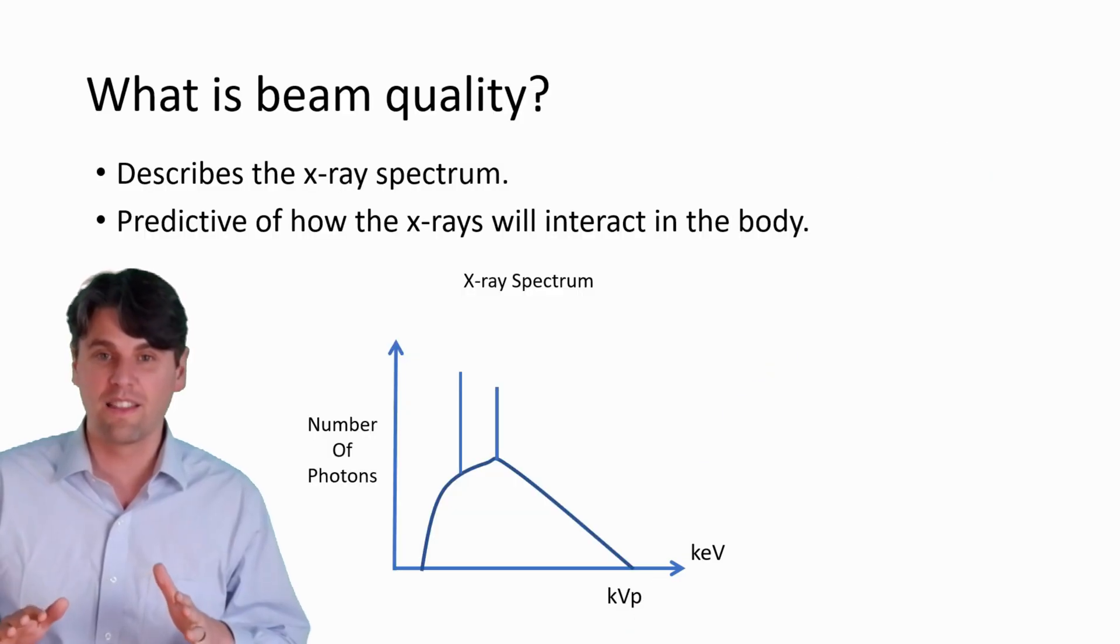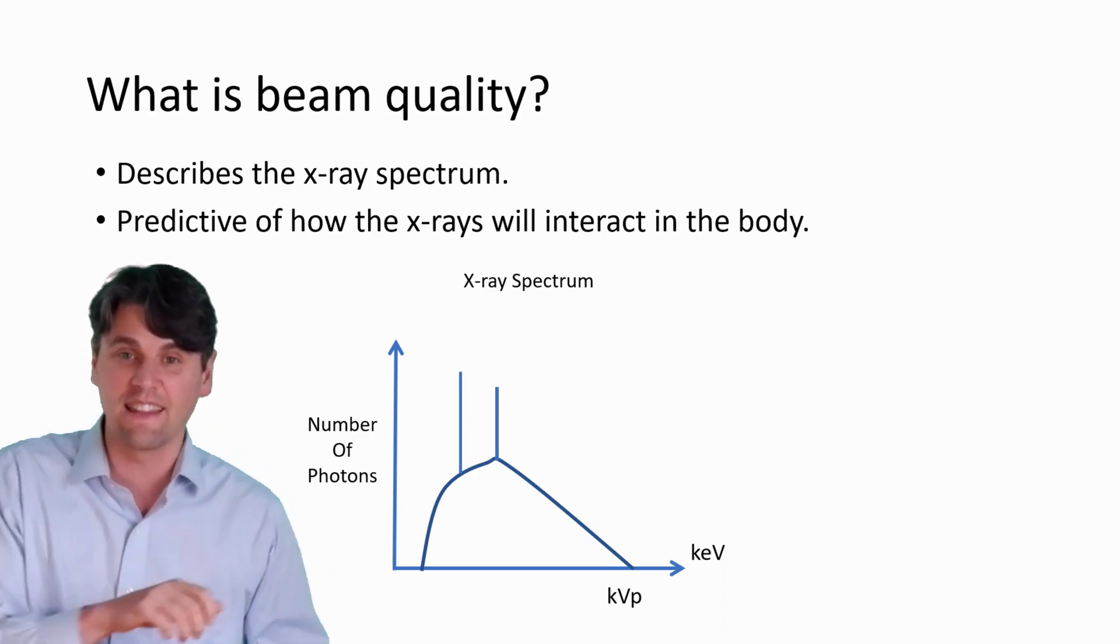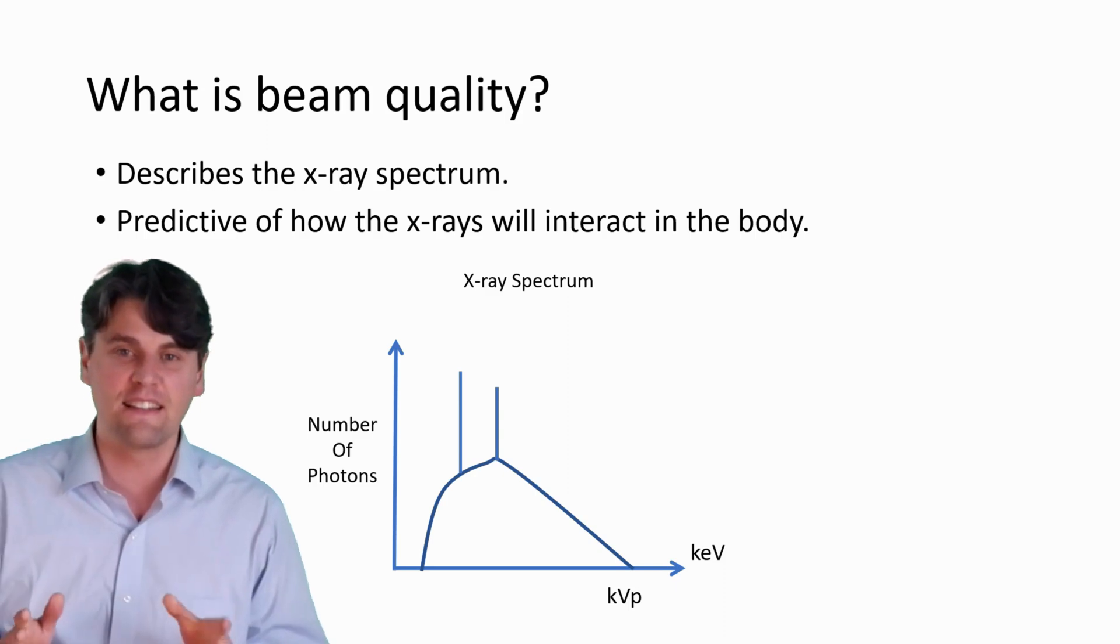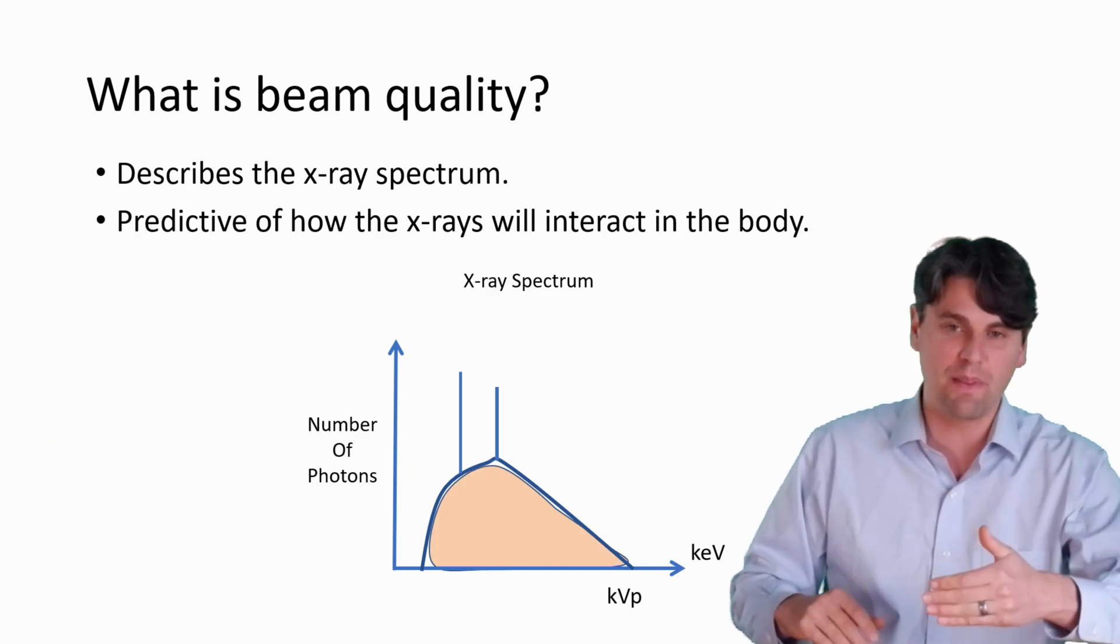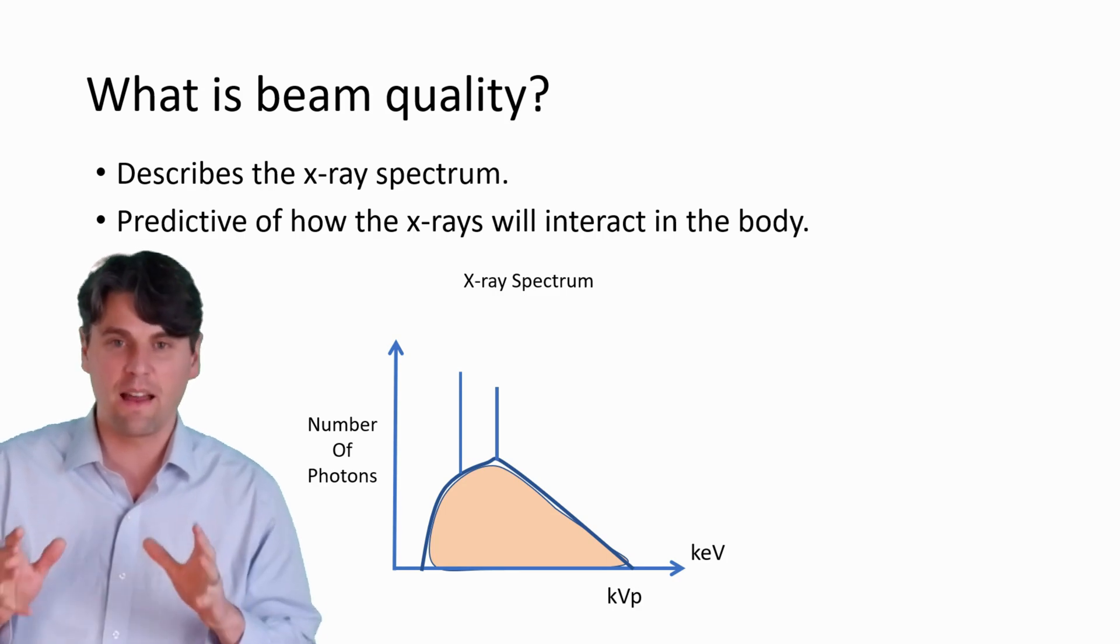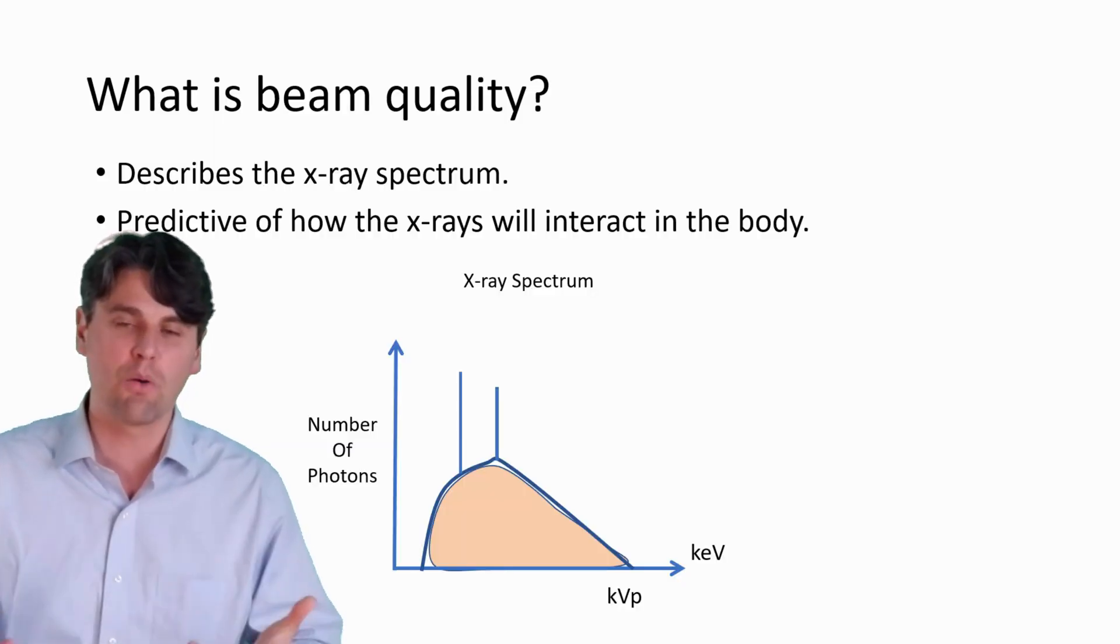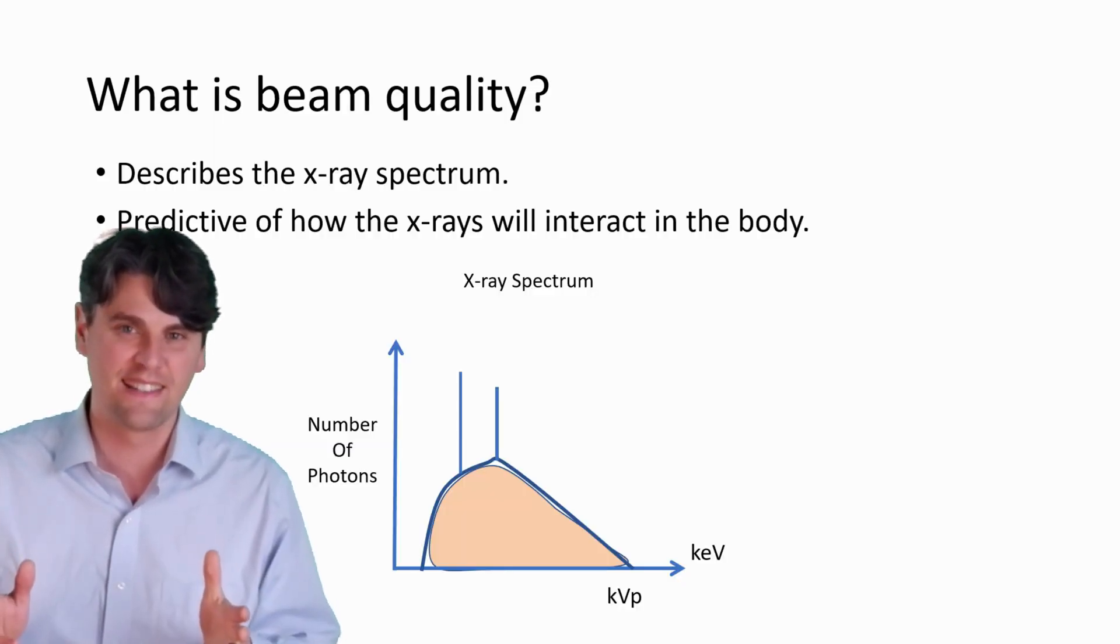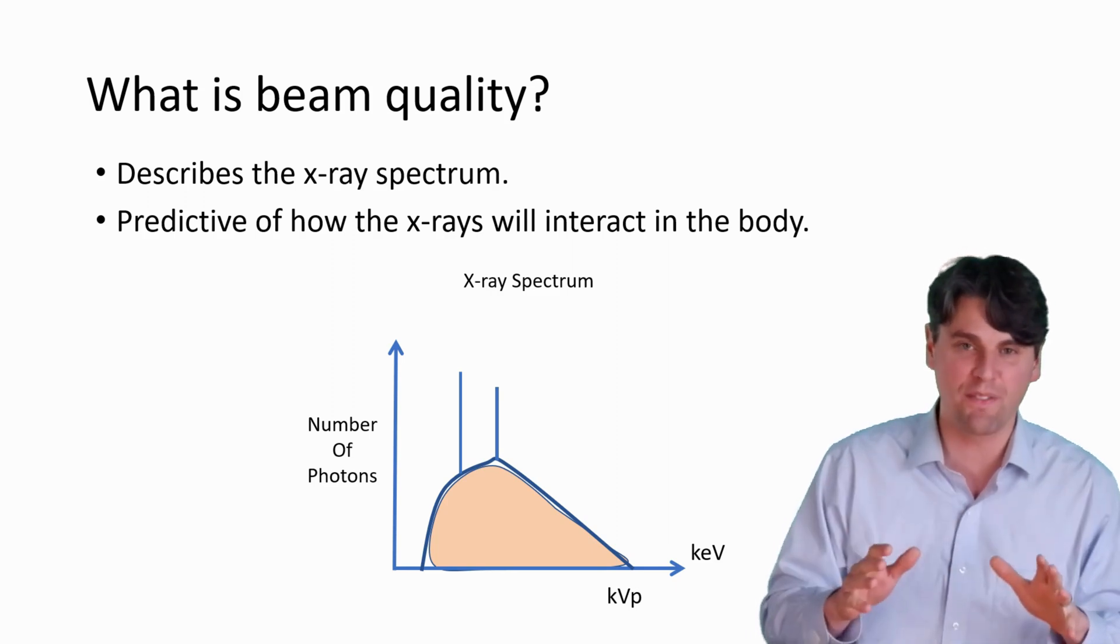We typically draw the spectra with the number of photons on the y-axis and the keV or the energy on the x-axis. And the idea here is we can look at the area under the curve. Some of those x-ray photons will stop in the patient and others will be measured on the detector. In general, if we have more x-ray photons, that means a higher radiation dose. It also means lower noise in our images. And if there's a change in beam quality, that means there's a change in the shape of this beam.